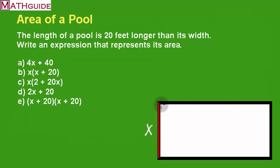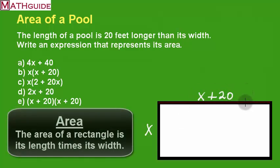Now we know that the length is 20 feet longer than the width. So if the width is X, we want some number that's 20 more than the width. It's got to be X plus 20. To calculate the area of a rectangle, we're going to multiply X times X plus 20.